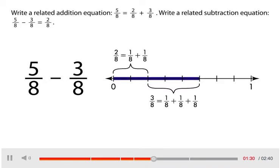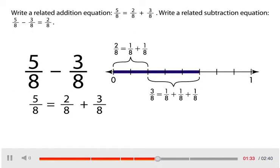Write a related addition equation. 5 eighths equals 2 eighths plus 3 eighths. Write a related subtraction equation. 5 eighths minus 3 eighths equals 2 eighths.